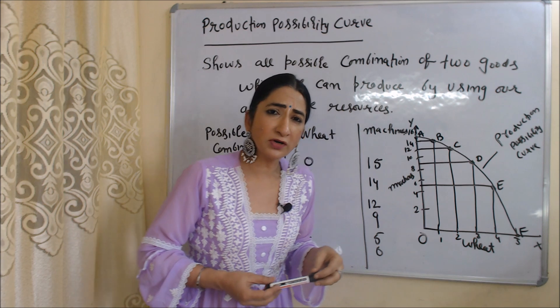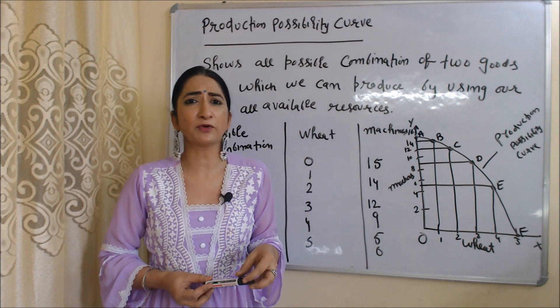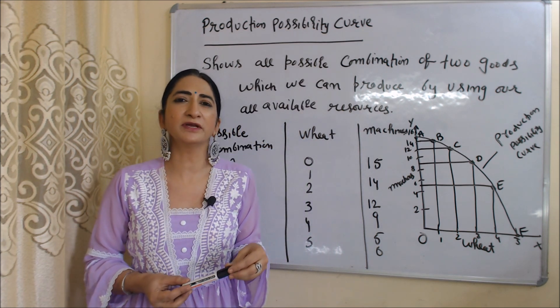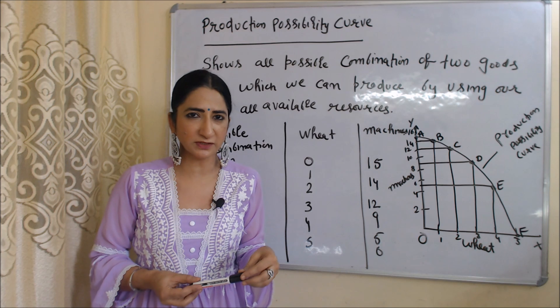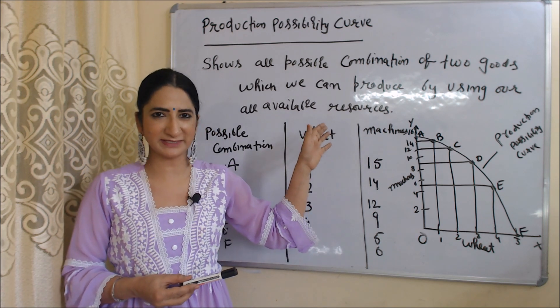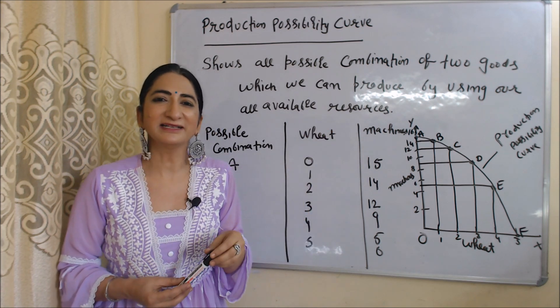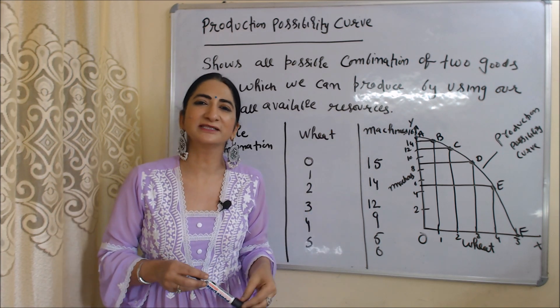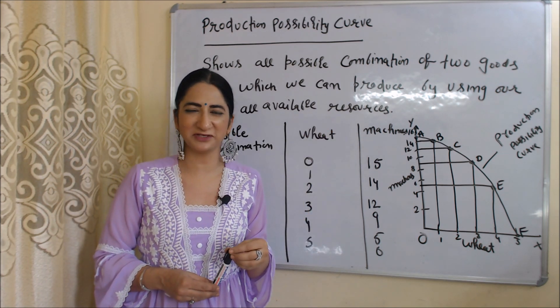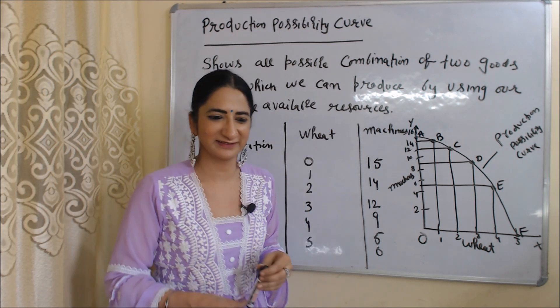This is all about the central problem of an economy, micro versus macroeconomics, positive versus normative economics, and production possibility curve. I think you got it — thank you so much for watching this video. Bye, take care.